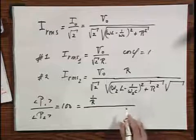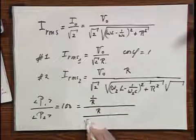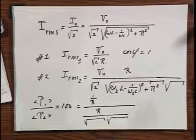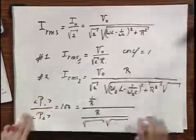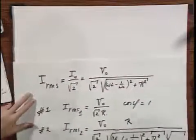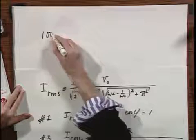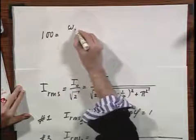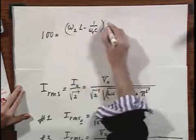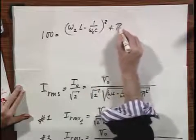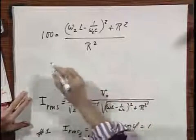And so what do I get? I get upstairs 1 over R, and I get downstairs R over the square root of this, again times the square root of this. And so, maybe I'm going a little bit too far, I could have left you now solving this equation, but I do get, we have plenty of time, so why not, omega 2 L minus 1 over omega 2 C squared plus R squared divided by R squared. That is now the requirement for that power ratio to be 100.